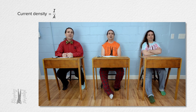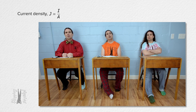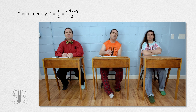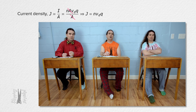And what is the symbol for current density? It's uppercase J. Right. And we can substitute the equation you just derived for electric current into the equation — cross-sectional area cancels out — and we get that current density equals N, charge carrier density, times drift velocity times Q, charge per carrier.